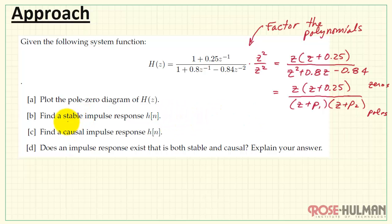Next, we want to find the impulse response h of n. And we're looking for two different types, either stable or causal, or perhaps both.